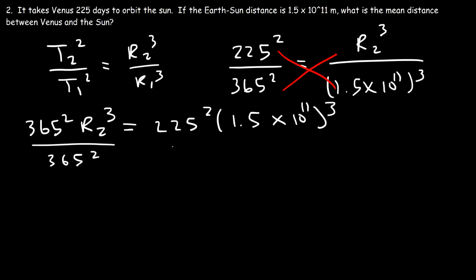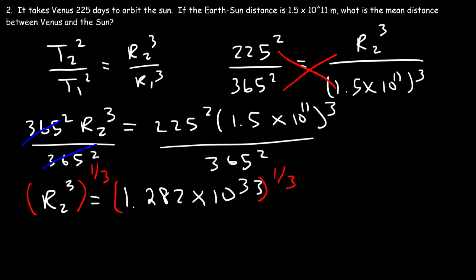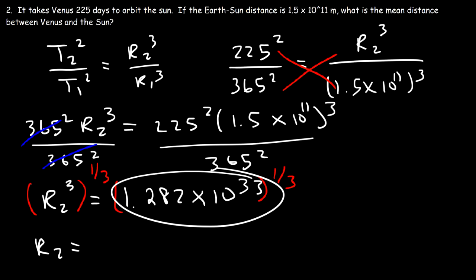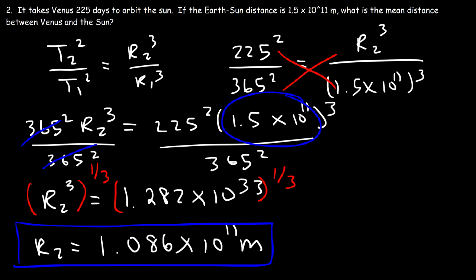So R₂³ = (1.5×10¹¹)³ × 225² / 365², which gives approximately 1.282×10³³. Taking the cube root (raising to the 1/3 power) gives R₂ ≈ 1.086×10¹¹ m. This is less than the Earth-Sun distance because Venus is closer to the Sun and therefore has a smaller period.